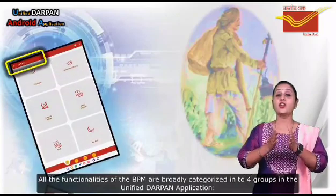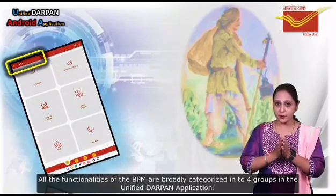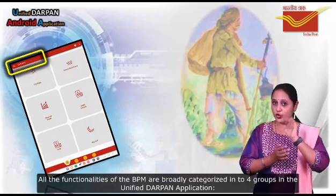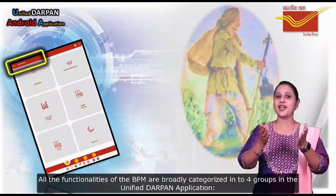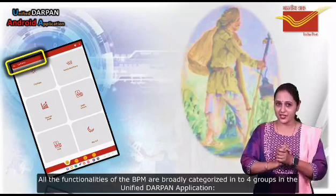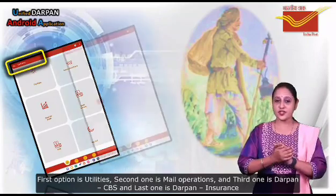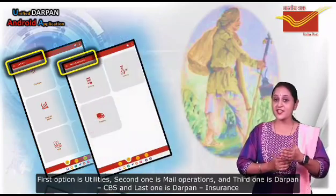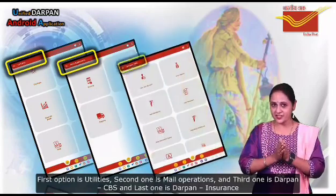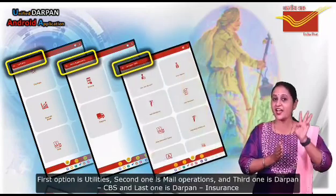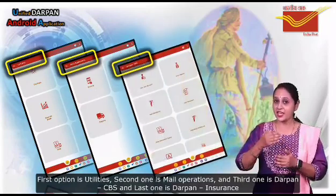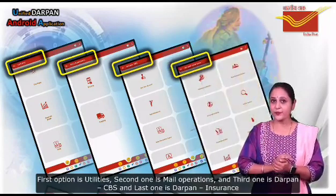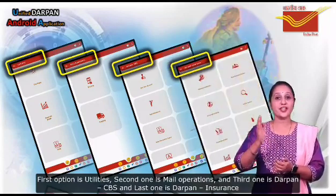All the functionalities of the BPM are broadly categorized into four groups in the unified Durpan application. The first option is Utilities, the second one is Main Operations, the third one is Durpan CBS, and the last one is Durpan Insurance.